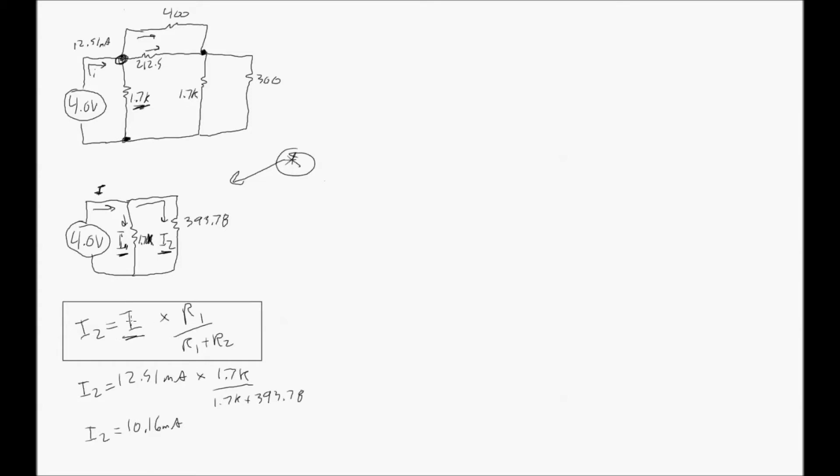So just plugging the numbers into the formula, you know your I, that's what we found before, as 12.51 milliamps. You know R1 is your 1.7K. Your R2 is your equivalent resistance from the rest of the circuit there. You plug it in and you get I2.